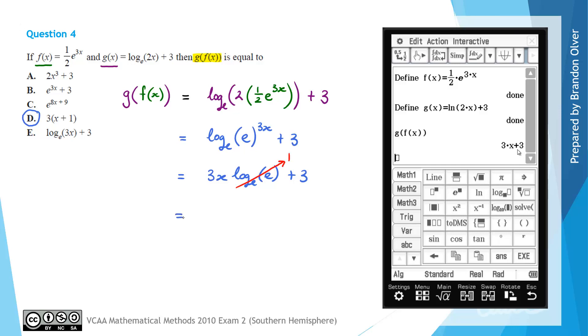And then log e of e is simply 1. So that's where the calculator gave 3x plus 3. And then we identified that factoring out the 3 and leaving behind x plus 1 would give us the format of D, which is the correct answer for this question.